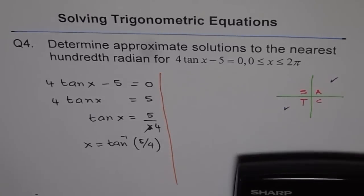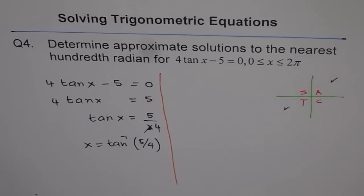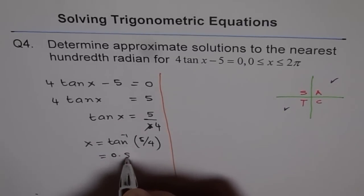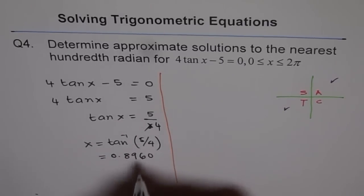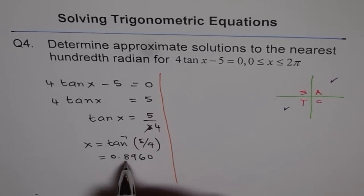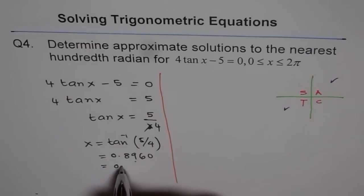We'll put the calculator in radian mode and do tan inverse of 5 divided by 4, and we get 0.8960. You can round this to the hundredth place, so it becomes 0.90.